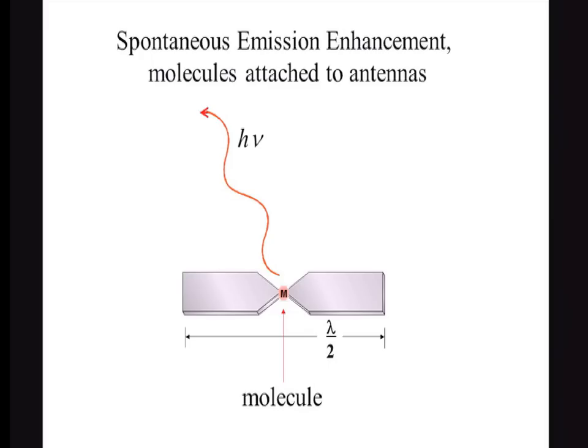However, if we provide an antenna to a molecule, we can make up for the fact that the molecule is too small to be a good antenna, and we can speed up the spontaneous emission by this enormous factor. The conclusion is that spontaneous emission can become faster than stimulated emission if the spontaneous emitter has the benefit of an antenna.